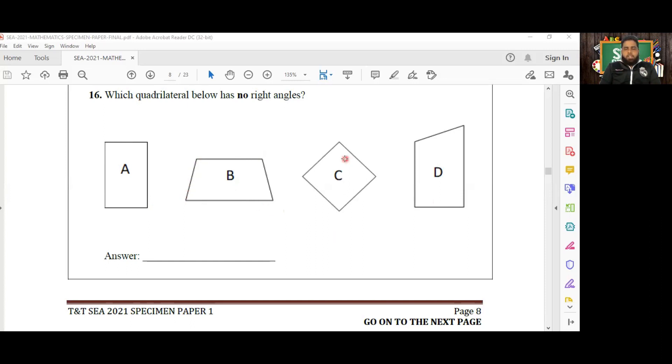Then we have C which is a square, all right angles one, two, three, four. Then we have figure D which is a right trapezium. So we have one, two right angles in this figure. So the figure having no right angles is therefore figure B.